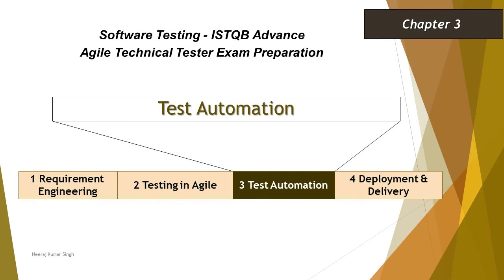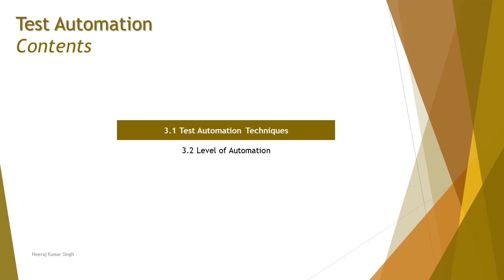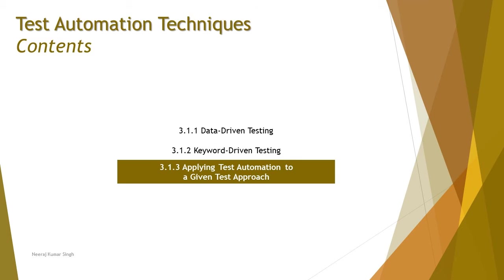Hello friends, greetings for the day. Welcome back to another tutorial on ISTQB Advanced Agile Technical Tester. We are in Chapter 3, still continuing with 3.1, looking at the last topic of this segment: 3.1.3 — Applying Test Automation to a Given Test Approach.